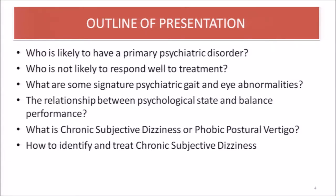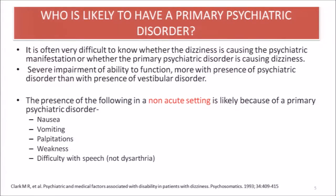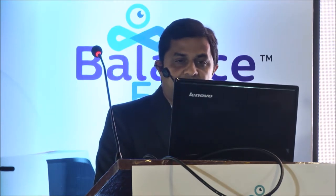First, who is likely to have primary psychiatric disorders? It is often very difficult to know whether the dizziness is causing the psychiatric manifestation or whether the primary psychiatric disorder is causing dizziness. Severe impairment of ability to function is more common in the presence of psychiatric disorders than with vestibular disorders. In a non-acute setting, presence of repetitive nausea, vomiting, palpitations, weakness, and difficulty with speech is likely due to primary psychiatric disorders.